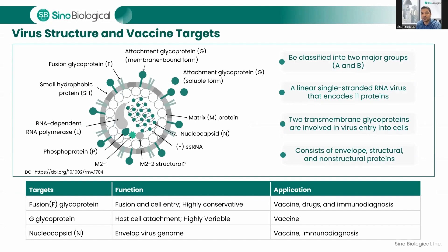Let's explore the key antigens and their functions in both diagnosis and vaccine development. RSV is a polymorphic negative-sense single-stranded RNA virus. RSVs are classified into two major groups, A and B, based on antigenic differences in the G-glycoprotein. Although both strains often co-circulate, only one predominantly causes infections in a specific period. The RSV RNA encodes 11 proteins. The virus has two transmembrane glycoproteins involved in viral entry: the G-glycoprotein, also called attachment protein, and the fusion, or F-glycoprotein.